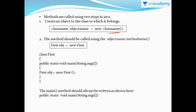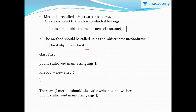Methods are called using two steps. First, you call by creating an object - for example, give the class name, then give an object name like 'obj', and ask to create a new object for this class. Second, the method should be called using object name dot method name. For example, with class name 'First', give an object and ask to create a new object for that class.